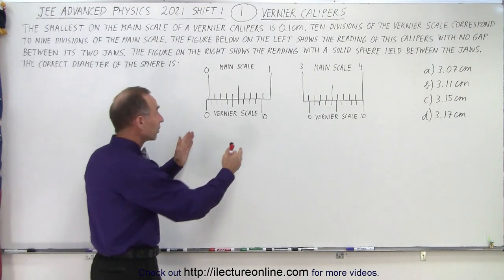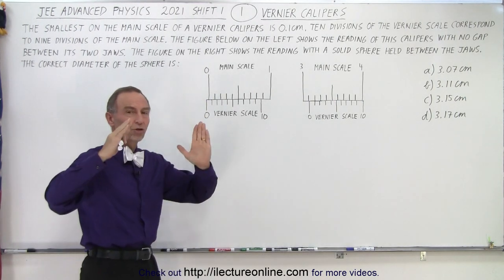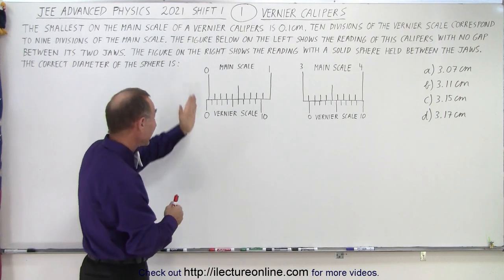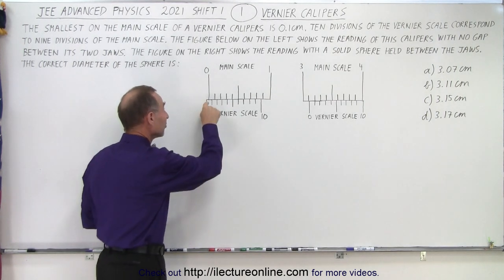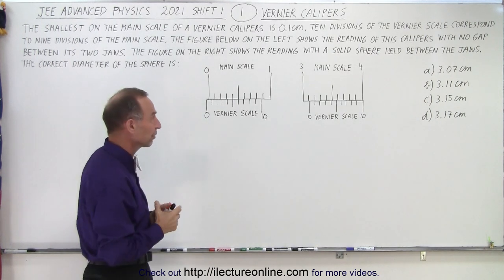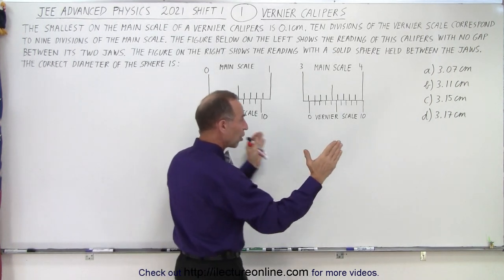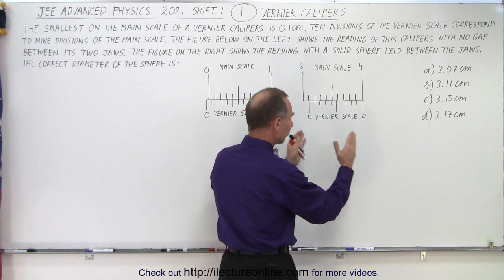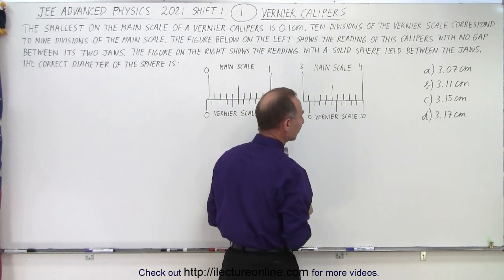So the drawing on the left indicates the zero reading. In other words, when the jaws are closed it should be exactly on zero, but notice it's not exactly on zero so we need to account for that in the overall measurement of what we're trying to measure. On the right side we have the jaws clamped around a solid sphere and this is what the reading gave us.